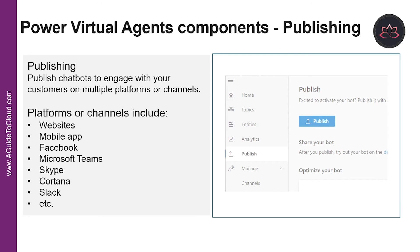And finally, what is publishing? With Power Virtual Agents, you can publish chat bots to engage with your customers on multiple platforms or channels. These include live websites, mobile apps, and messaging platforms like Microsoft Teams and Facebook. After you have published at least once, you can connect your chat bot to additional channels. Each time you want to update your chat bot, you publish it again from within the Power Virtual Agents app itself. You can also configure a Power Virtual Agents chat bot to provide authentication capabilities so users can sign in with any OAuth 2 identity provider such as Azure Active Directory, a Microsoft account, or Facebook.